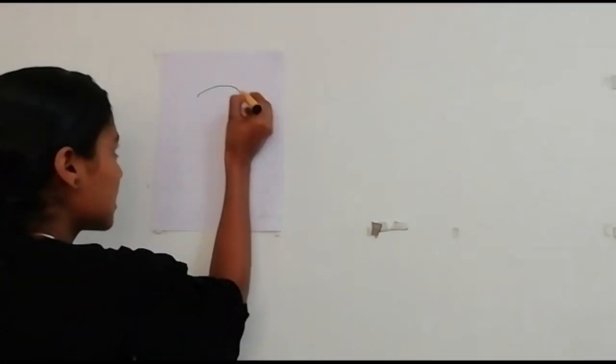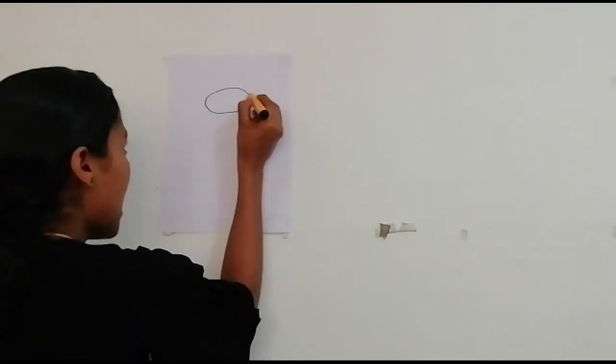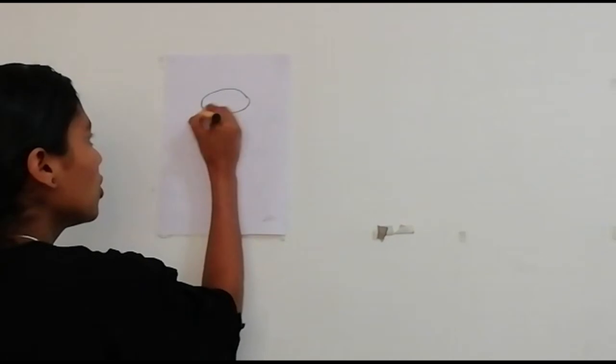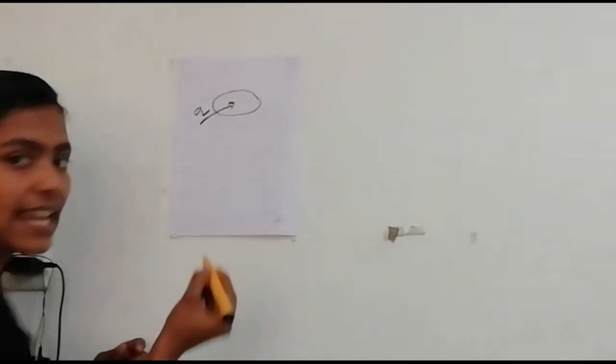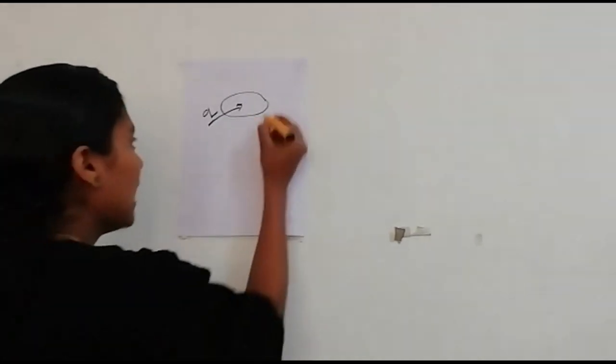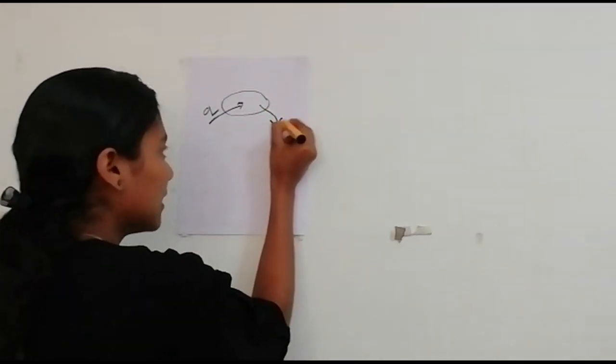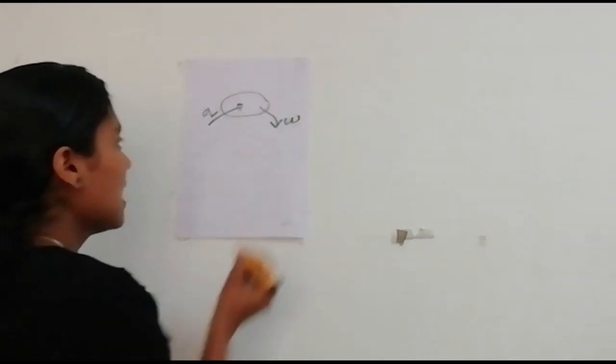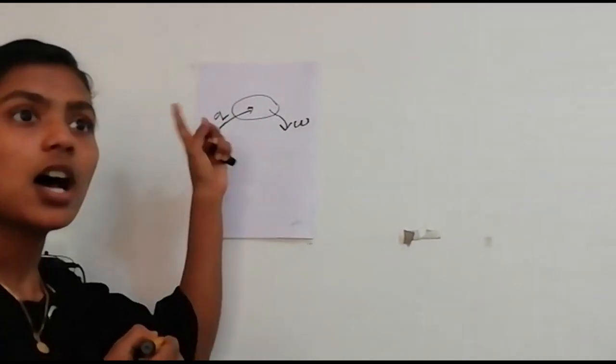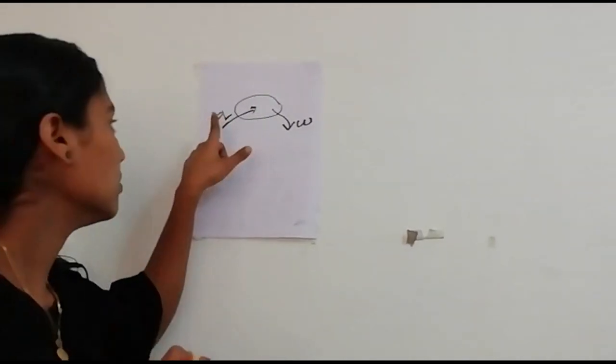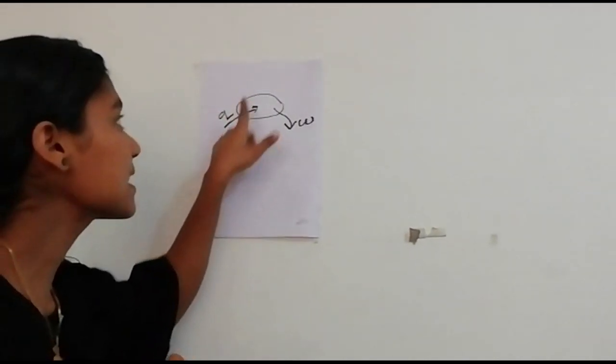There is a mathematical representation for this law. First, let us consider a system. Q is the quantity of heat, and W is the work done.